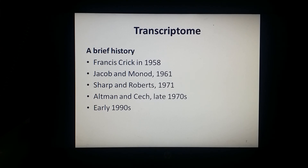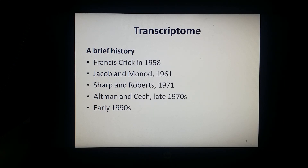Altman and Cech in the 1970s revealed that RNA can function as a catalyst. In 1982, Kruger put forward the ribozyme concept, demonstrating that RNA could act as both genetic material and a biological catalyst.